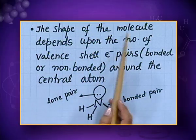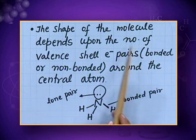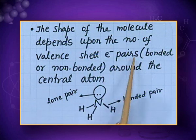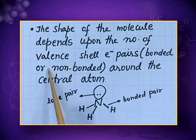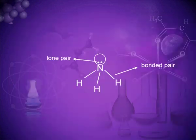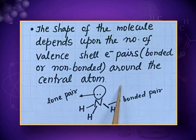First of all, let us study about the assumptions. The shape of the molecule depends upon the number of valence shell electron pairs. Electron pairs can be bonded or non-bonded around the central atom — that is, the shape of a molecule depends upon the number of electron pairs, which can be bonded or non-bonded.